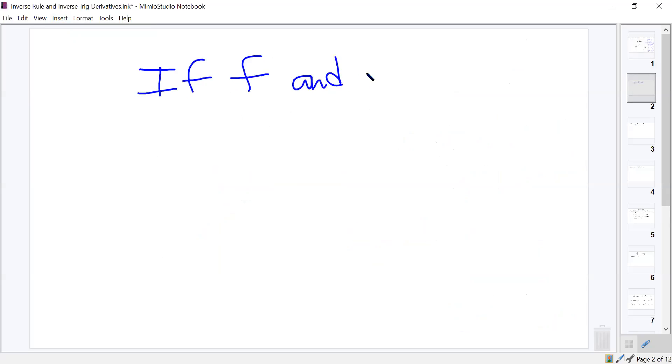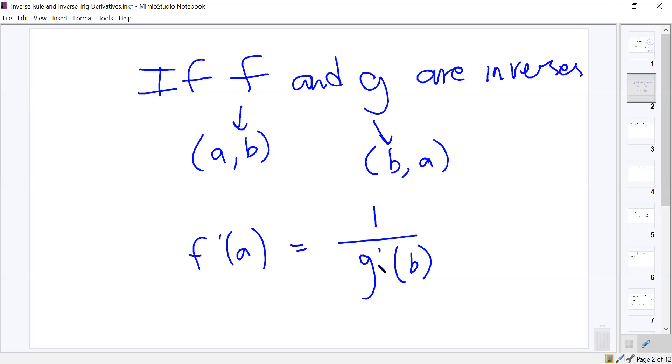So I'm going to say this in a slightly different way. If f and g are inverses, and f contains the point a, b, and g contains the point b, a, then f prime of a is equal to 1 over g prime of b. That is, in the most basic terms I can write it, that's the inverse rule. That if the two functions are inverses, then the derivative at one of their x values is equal to the reciprocal of the derivative of the other one at the corresponding x value. Does that make sense or no? Okay. Makes sense.